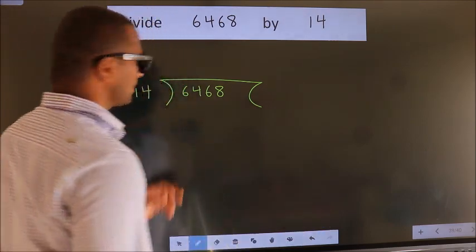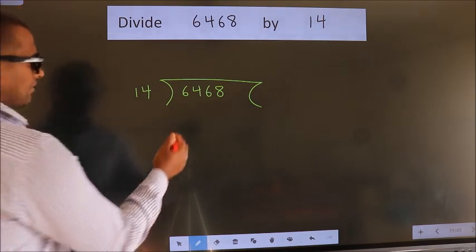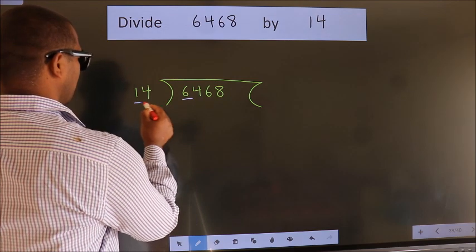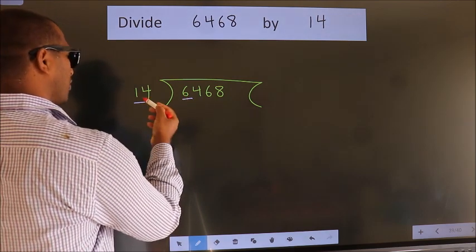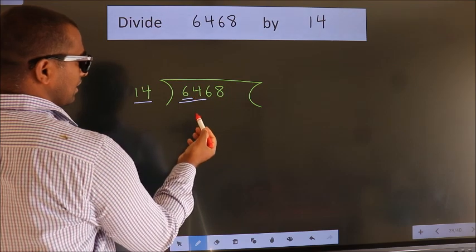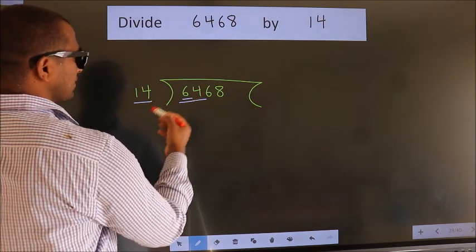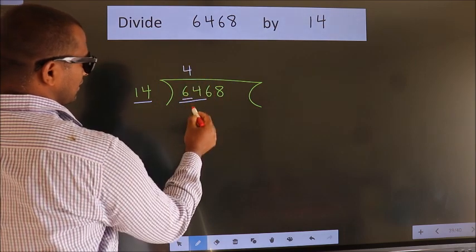This is step 1. Next, here we have 6, here 14. 6 is smaller than 14, so we should take two numbers: 64. A number close to 64 in the 14 table is 14 times 4, which is 56.